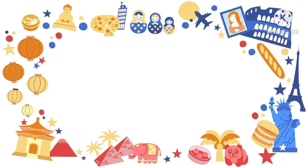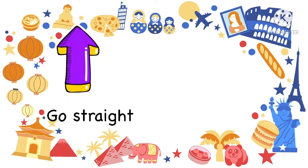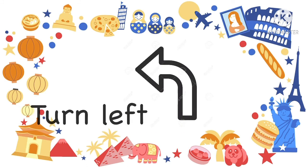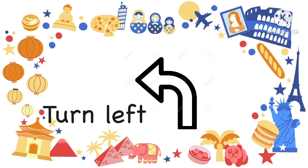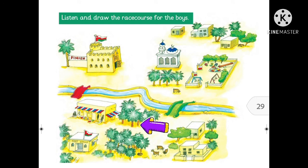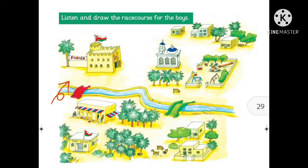Let's review the directions: go straight, turn right, turn left. The start of the race is at the fort. From there, the runners go out of the gate and turn left. They run around the mosque and then into the park. They run out of the park through the gate by the swings. They go across the village by the green bridge. They turn right and run through the date palms and between the souk and the post office.